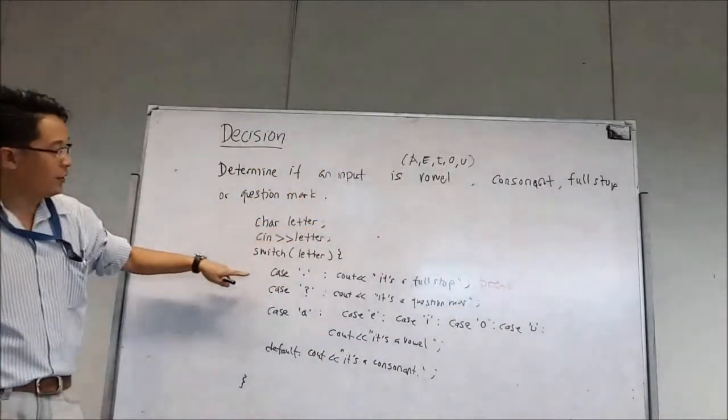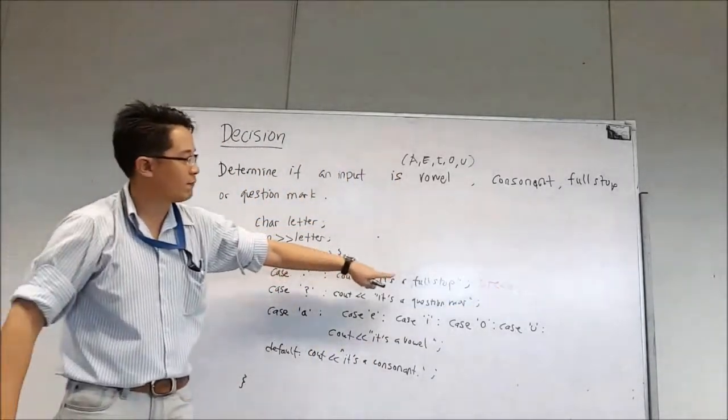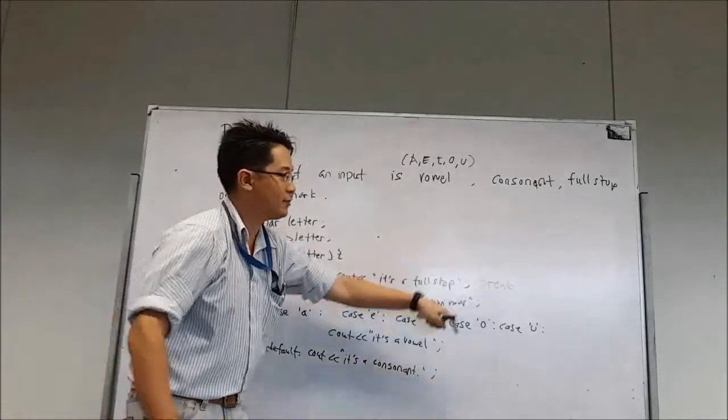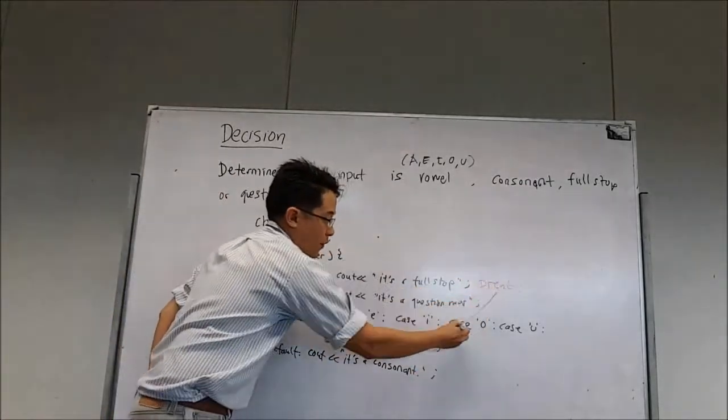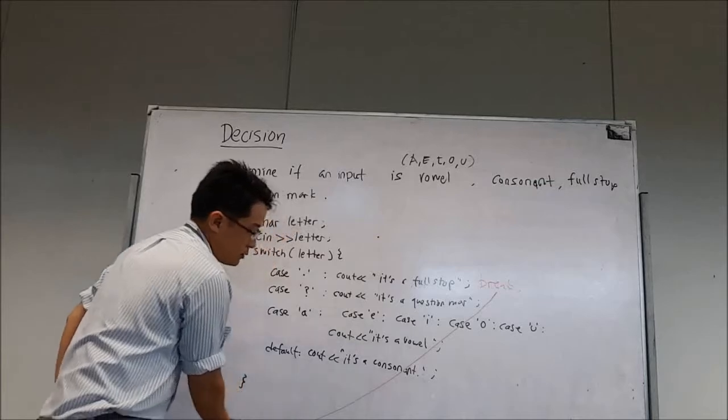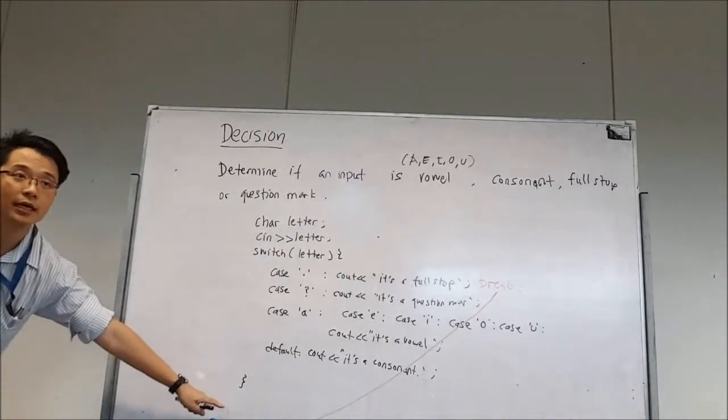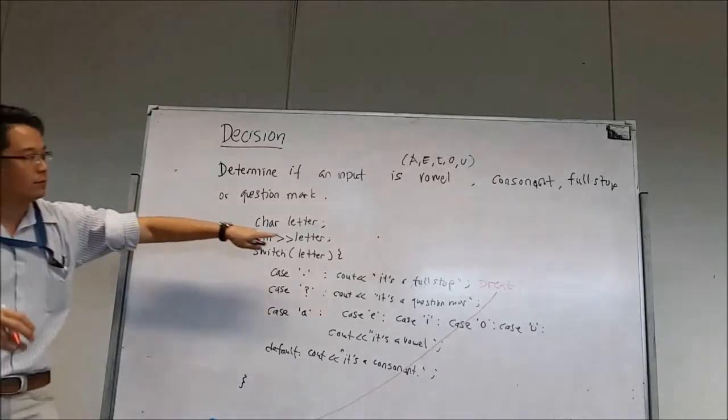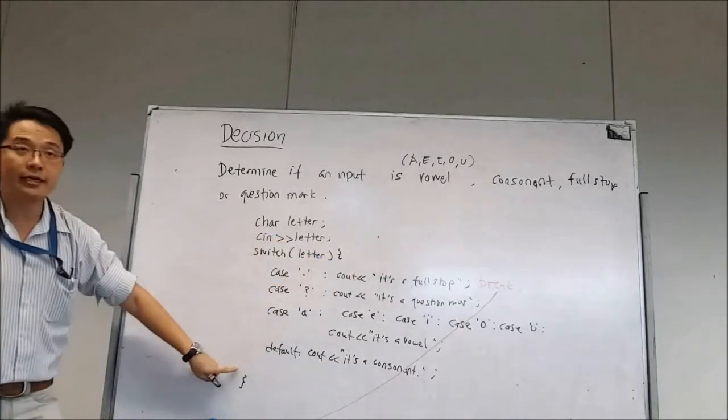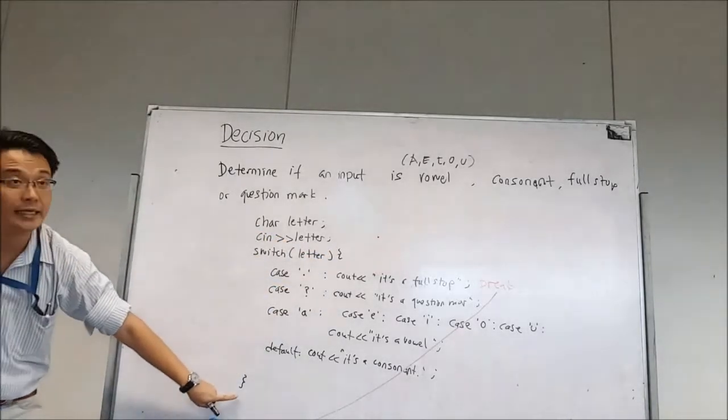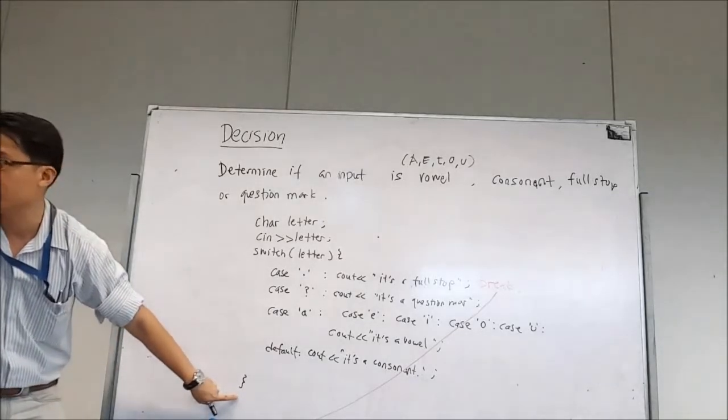But if I put break here, now it is full stop right, so you check okay it is full stop, C out it's a full stop, break. The moment it sees break it will jump out from the switch to the next line after the switch. The switch starts from this curly brace until this curly brace right, it goes to the line just underneath the curly brace which is under the switch.